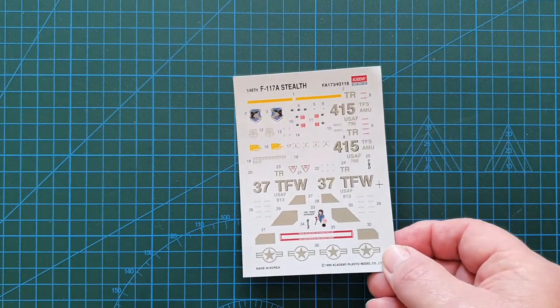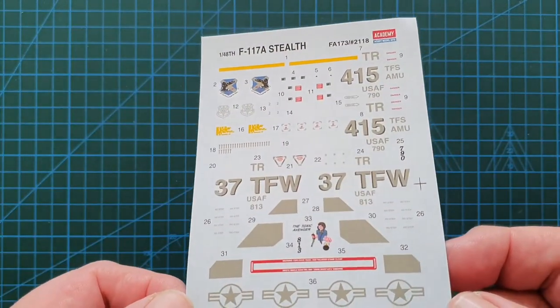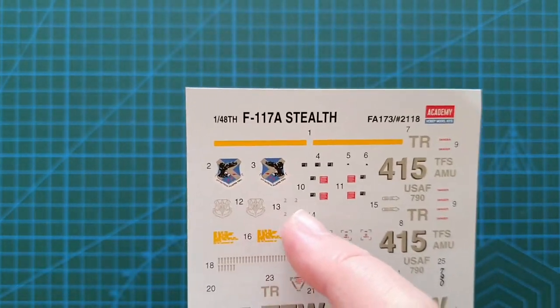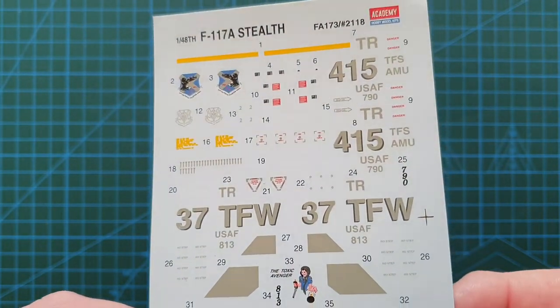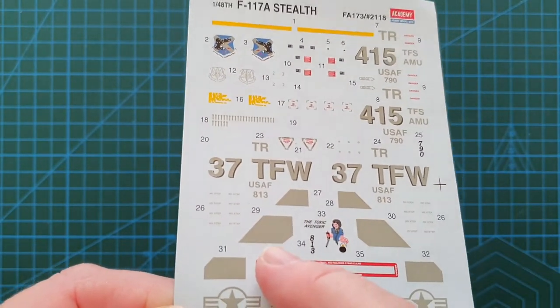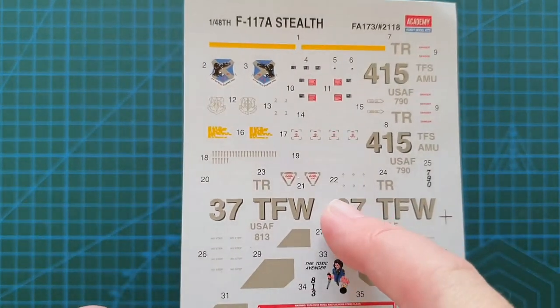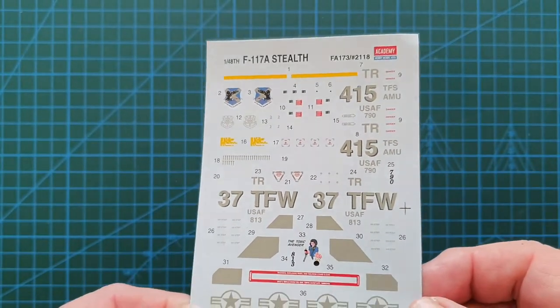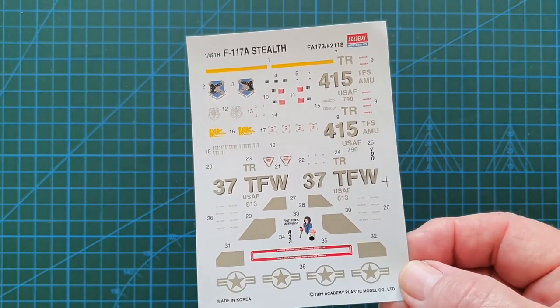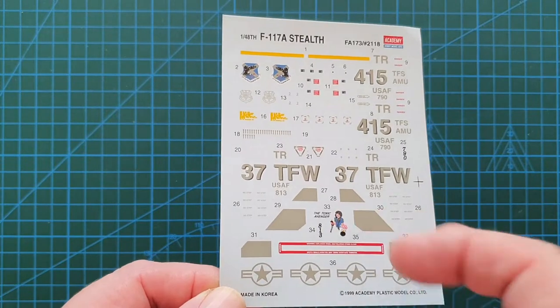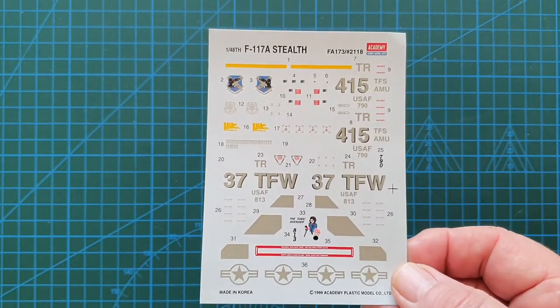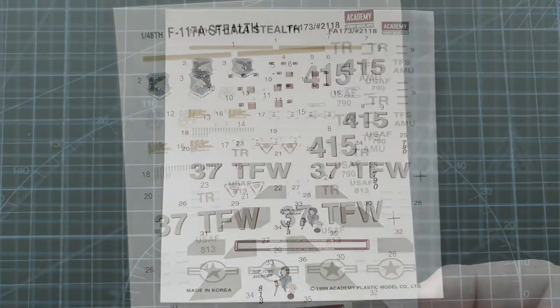So talking about decals, let's have a look. This is the decal sheet. That is your Toxic Avenger insignia, standard insignia and markings, fairly comprehensive. I do like that. I did read somewhere that someone thought these were too green, the low visibility markings. So if you didn't like that, you could quite easily go for one of the aftermarket sets available. I'm just going to go with these because it's still money and this didn't cost me that much to do anyway.